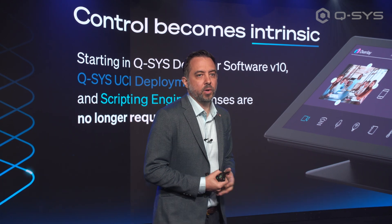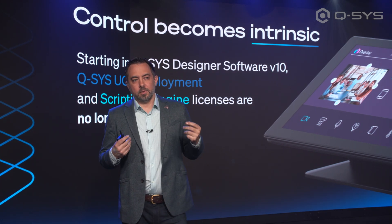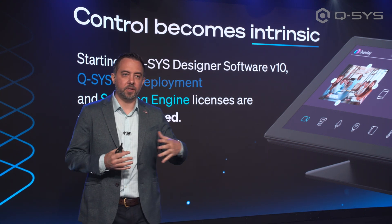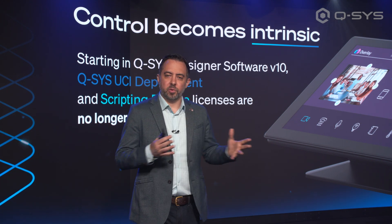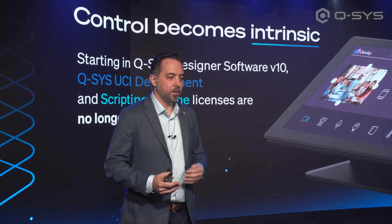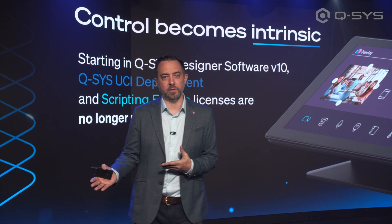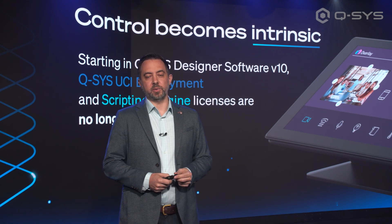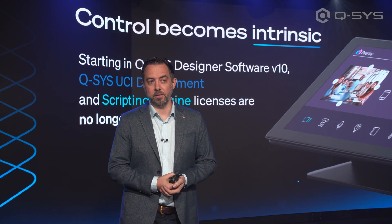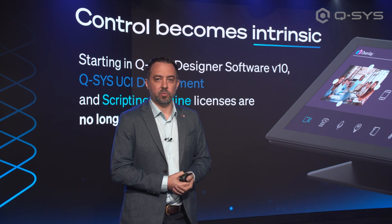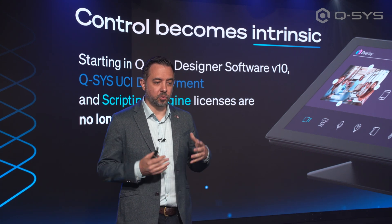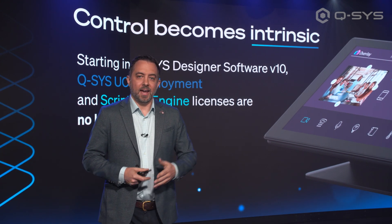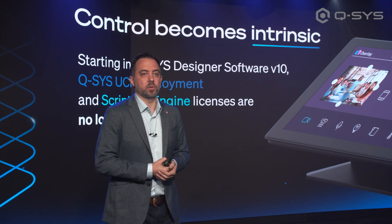So why are we making this change now? It used to make a lot more sense to have control as a licensable feature. Early on, not everyone was ready to use Q-SYS control, and it made sense to pay for it when you use it. Today, we've noticed that around 80% of the cores we sell have scripting and UCI licenses attached to them. So we made the decision — it no longer makes sense to burden our customers with the additional steps of purchasing and installing these licenses. We're just going to include it in every core going forward.